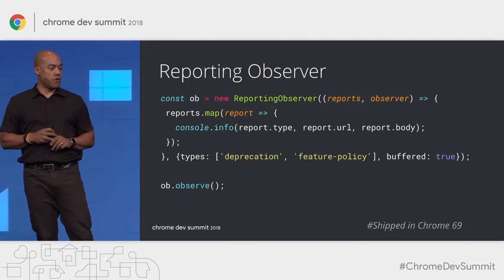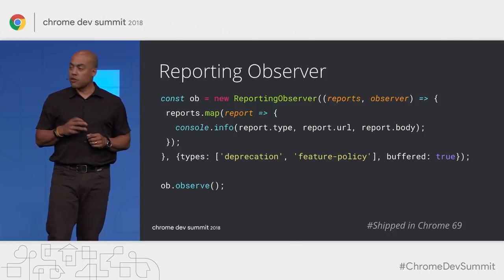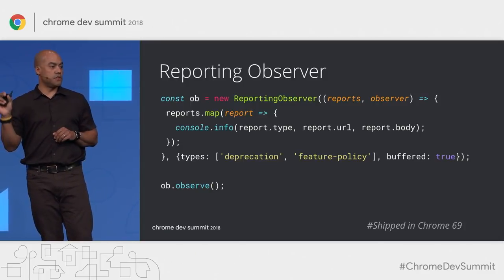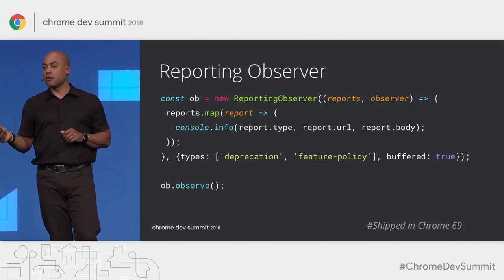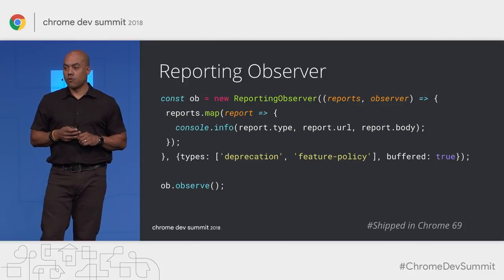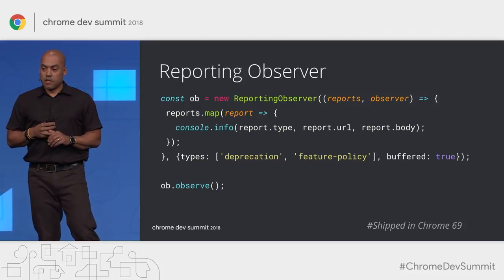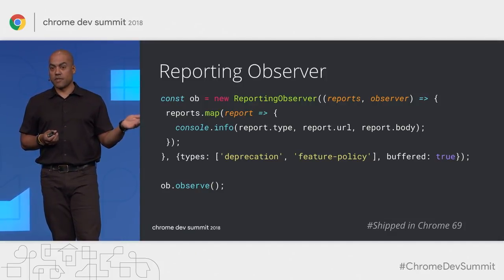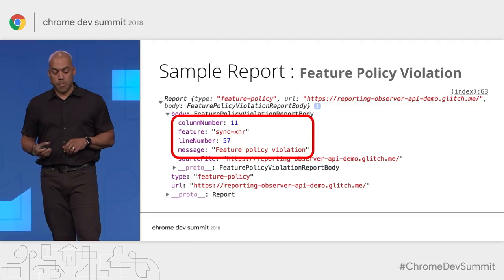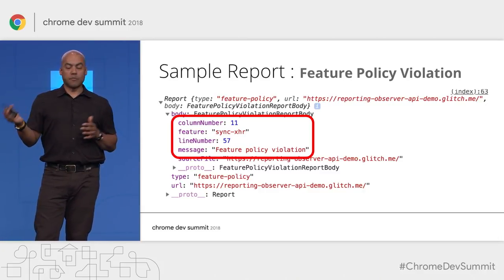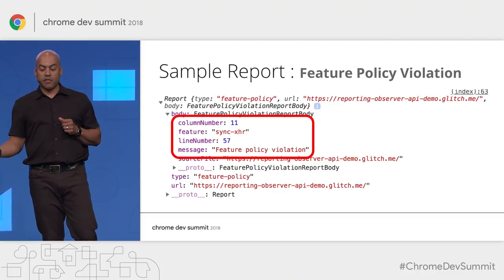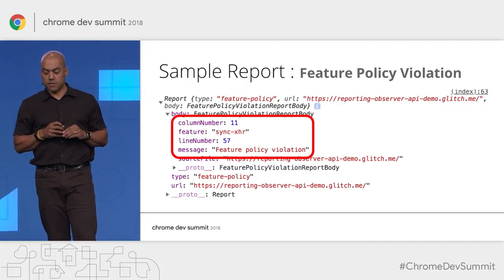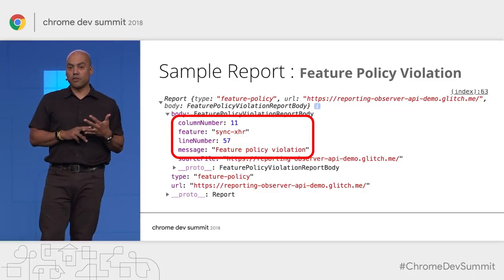There are two ways to use reporting. We have the Reporting Observer, which lets you collect reports client-side with a JS API. You can filter by report type — here we've said we just care about deprecations and feature policy violations — and then use the callback to funnel reports to your own analytics provider. Because it's client-side, the available types are limited. But the key feature is that it buffers results, so you can set up your Reporting Observer later and still get reports that happened earlier in page load. Every report has common fields: the type and the URL where the report happened. For feature policy violations, it tells you the feature being used and where in your code the violation occurred.